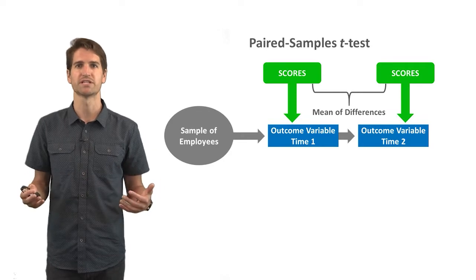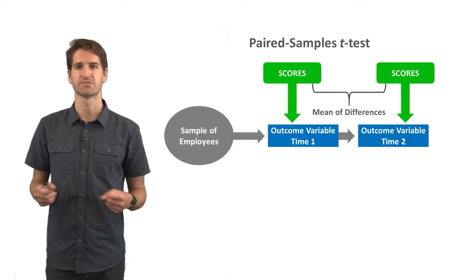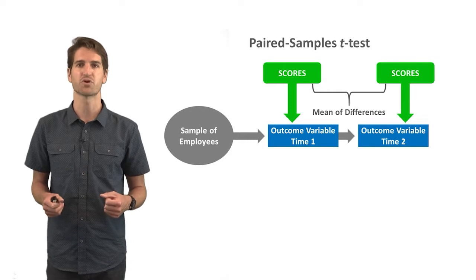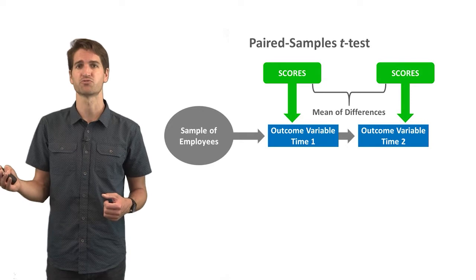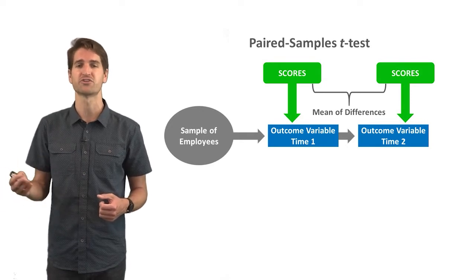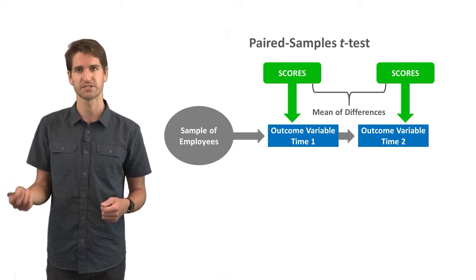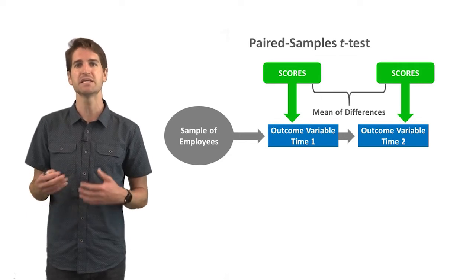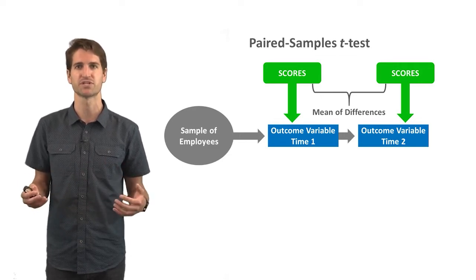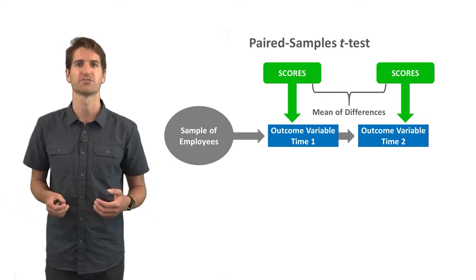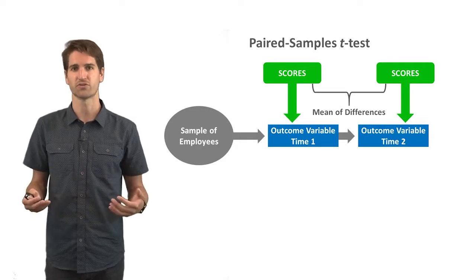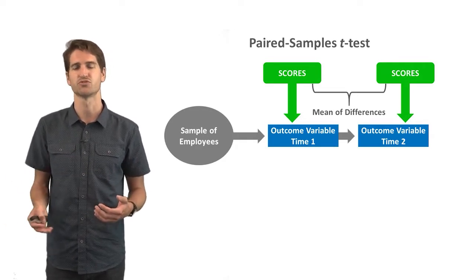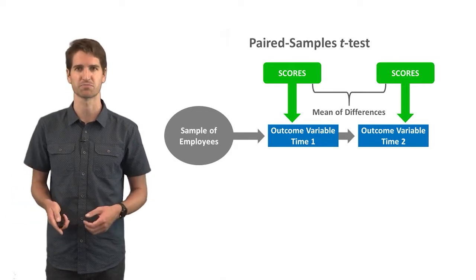What we're interested in here is the mean of the differences. We can take each person's outcome variable score at time two and subtract their score at time one, which creates a difference score. We're interested in whether the mean of the differences between these two sets of scores is significantly different from zero — for instance, whether there is a significant increase in scores from time one to time two.